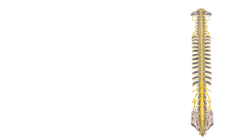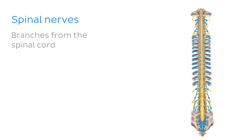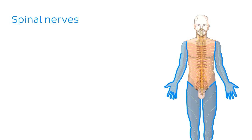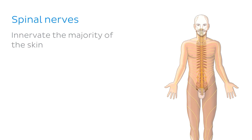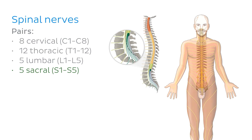What we're looking at here is the posterior aspect of the spinal cord as it sits within the vertebral canal, with spinal nerves branching away from it. These spinal nerves course to all the peripheral regions of the body, providing both sensory and motor innervation to the trunk wall, head and neck, and of course our limbs. Most relevant to us today is their role in the innervation of the majority of the skin of the body, with the exception being certain areas of the face, which are innervated by branches of the fifth cranial nerve, the trigeminal nerve. To refresh your memory, we have 8 cervical, 12 thoracic, 5 lumbar, and 5 sacral spinal nerves.